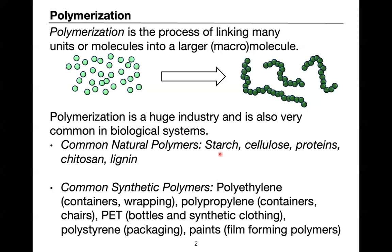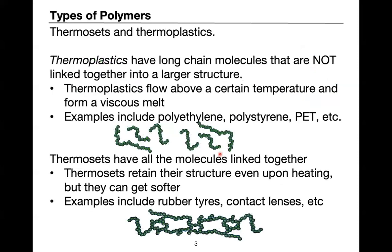There are two main classes of polymers: thermosets and thermoplastics. Thermoplastics are long-chain molecules whose chains are not linked together through covalent bonds — they are individual long molecules, not one globally connected molecule. When you heat thermoplastics to a certain temperature, they melt and flow, which enables processing. This is why it's relatively easy to make bottles of different shapes and sizes. Polyethylene, polystyrene, and PET are all thermoplastic polymers — when heated enough, the chains can move and be reshaped.